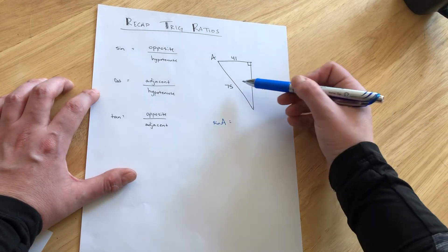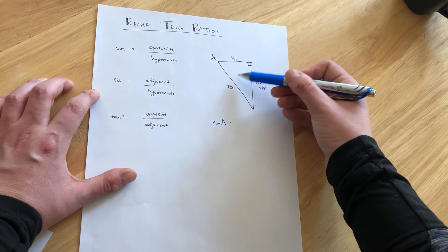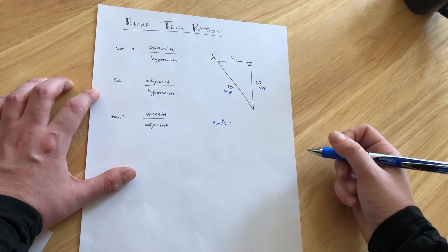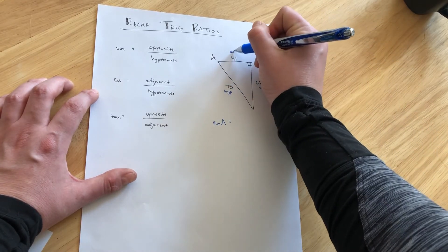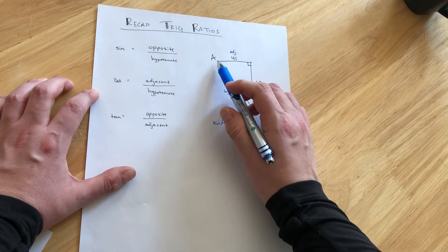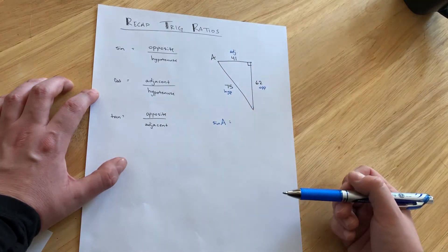The hypotenuse is always across from the right angle. So here's the hypotenuse. And then lastly, the third and final side that we haven't named yet must be adjacent to angle A because it's touching angle A but it's not the hypotenuse.